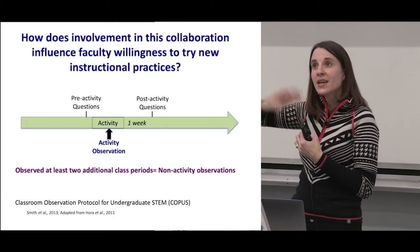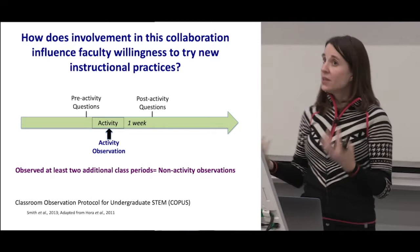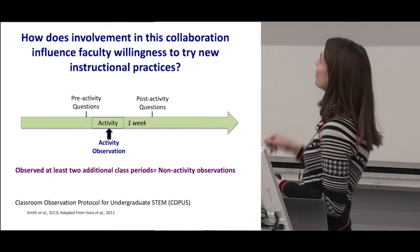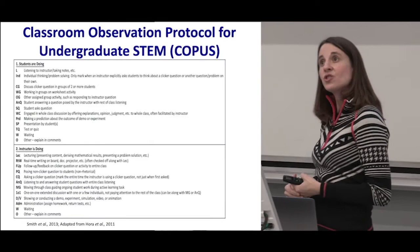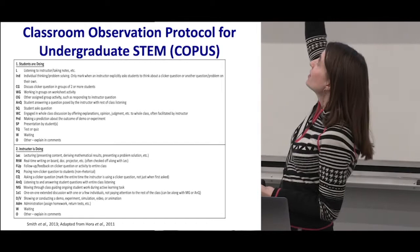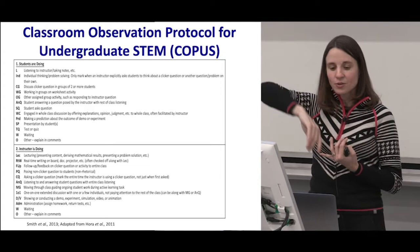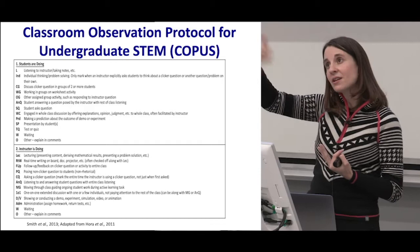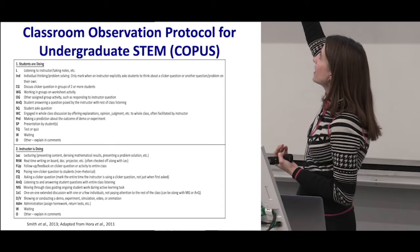We needed a protocol to look at what faculty were doing in the classroom, and we used the Classroom Observation Protocol for Undergraduate STEM, or COPUS. COPUS tracks instructional behaviors in the classroom. The top codes are what students are doing: L for listening, individual thinking, CG for discussing a clicker question. And then instructor codes include lecturing, real-time writing, following up, and so forth.